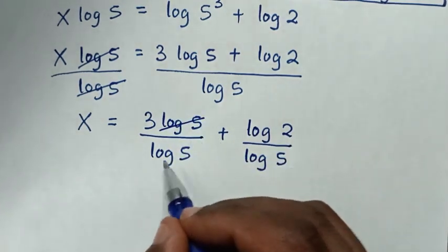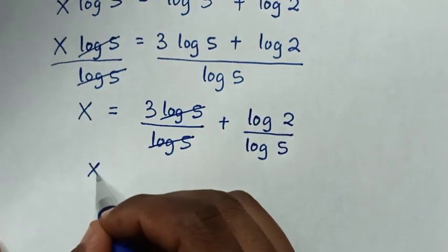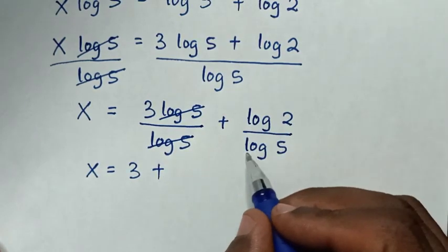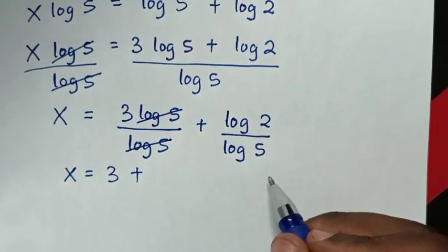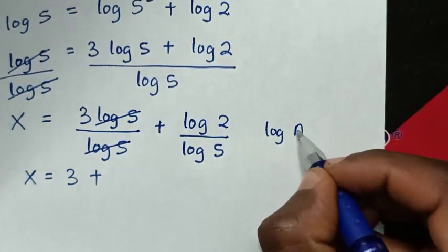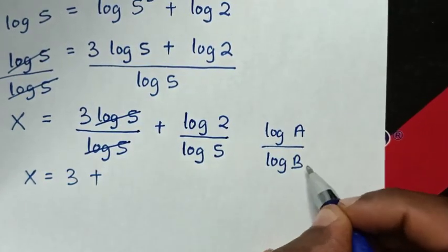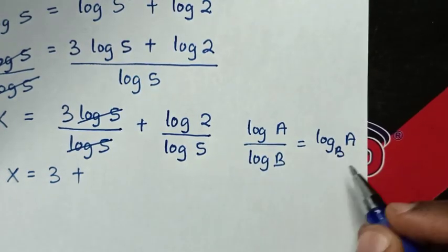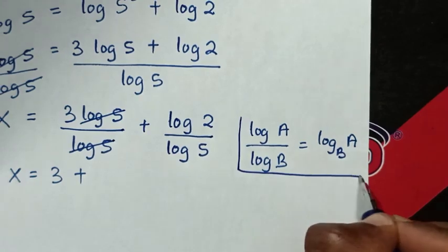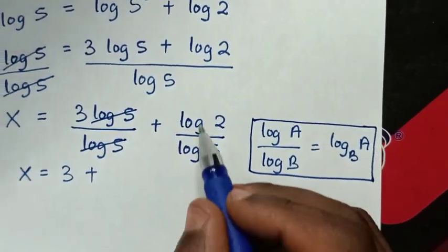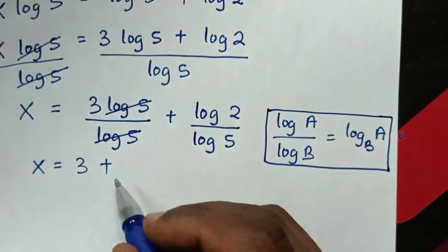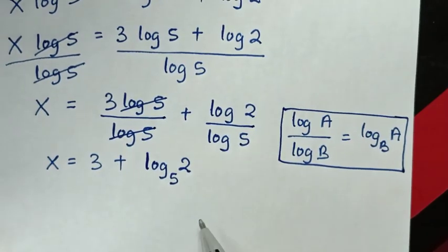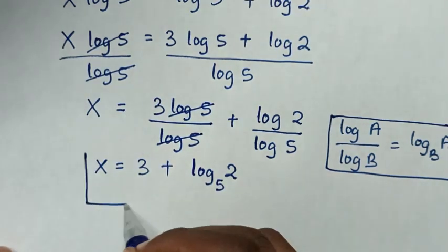Then this log of 5 will cancel this log of 5. So it will be x is equal to 3, plus log of 2 over log of 5, which is in the form of log of a over log of b equal to log of a base b. So in here it will be plus log of 2 base 5. Therefore this is our final answer.